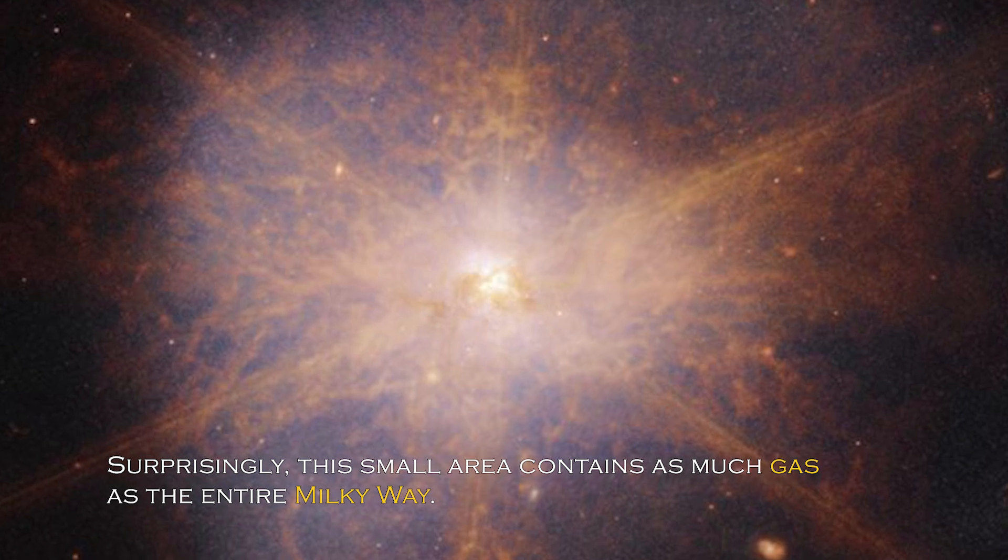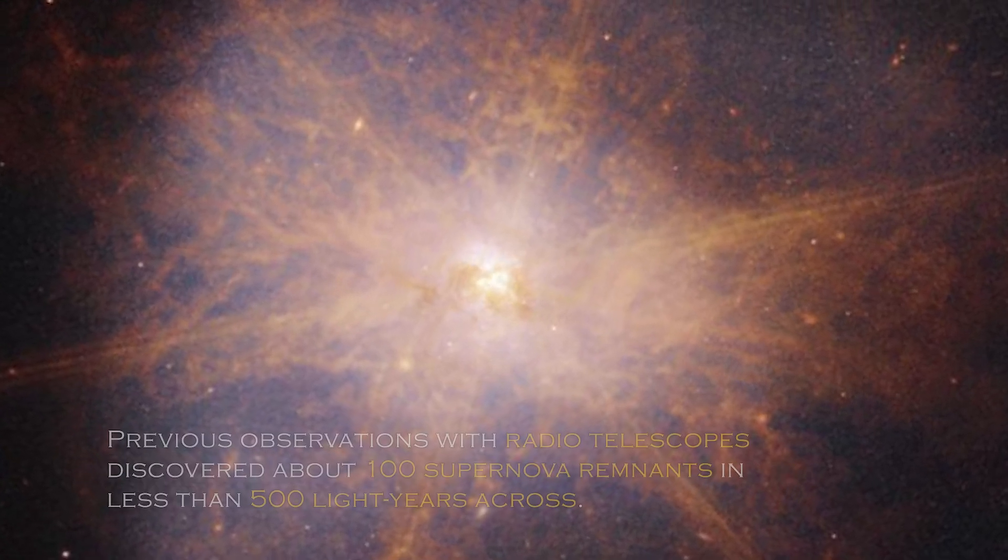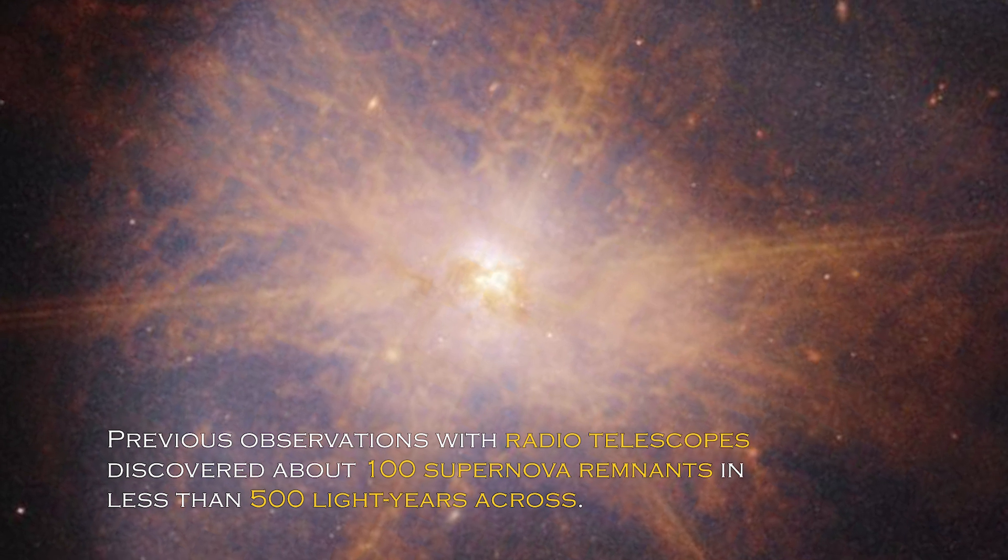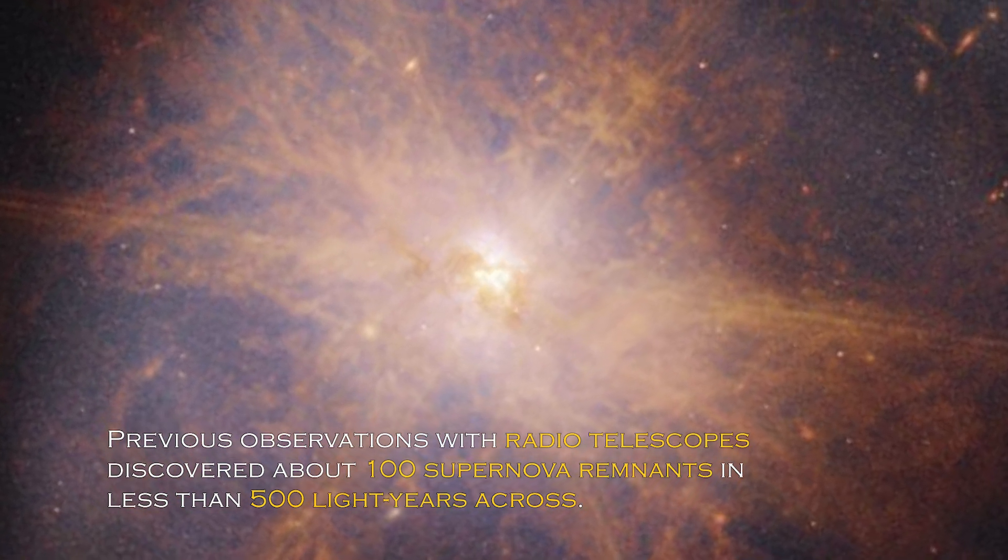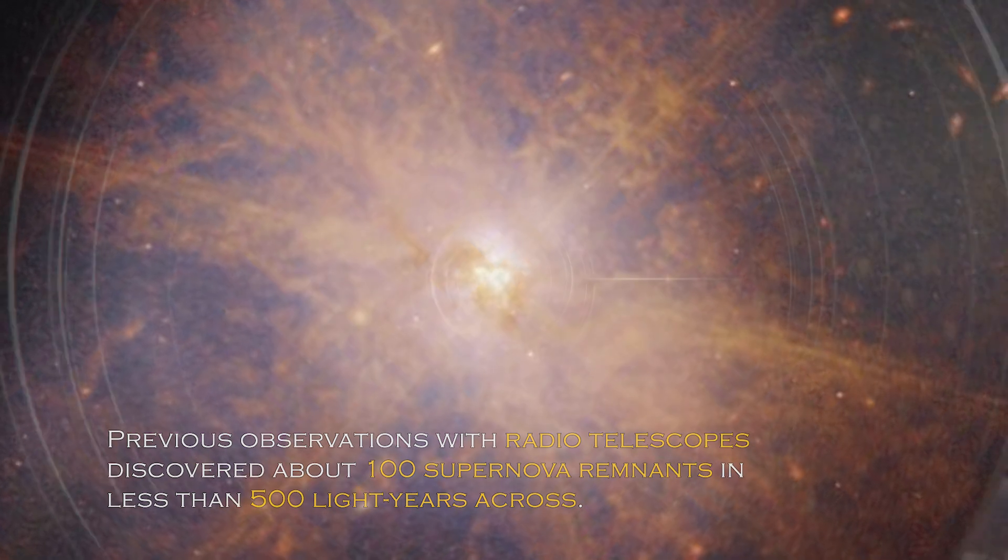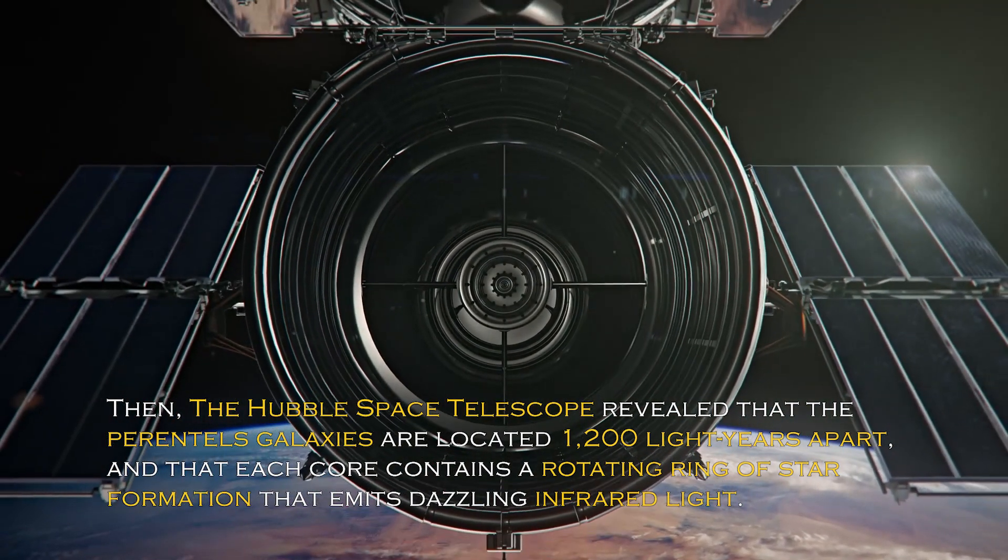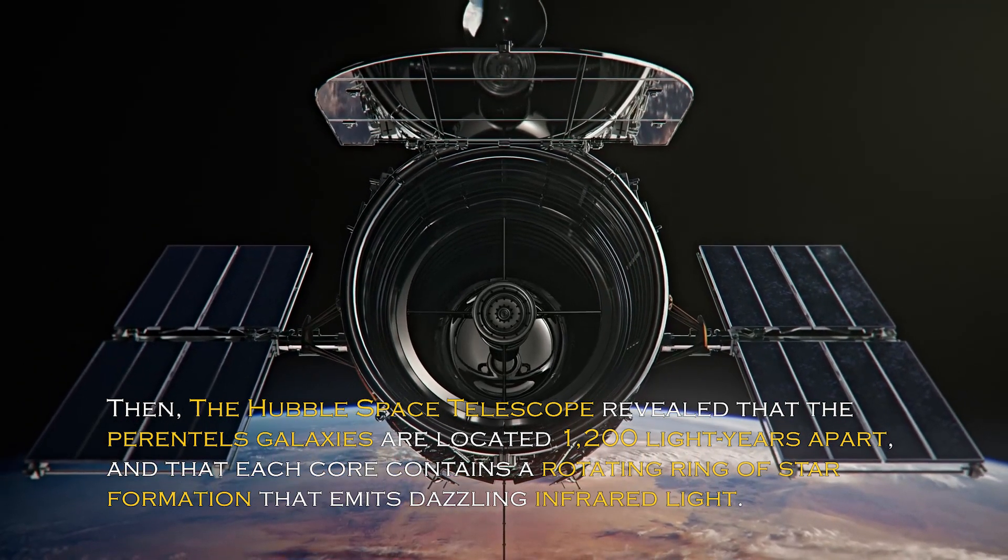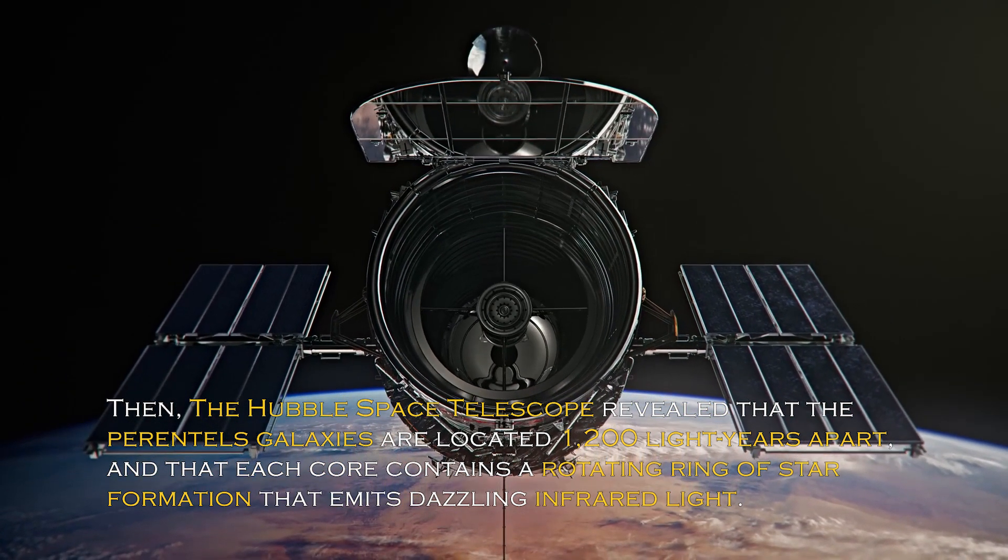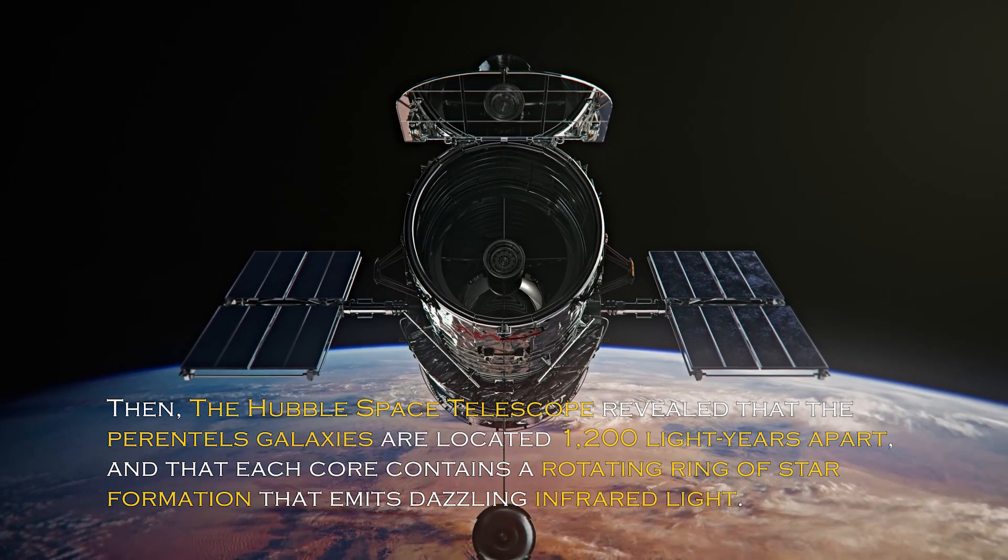Surprisingly, this small area contains as much gas as the entire Milky Way. Previous observations with radio telescope discovered about 100 supernova remnants in less than 500 light-years across. Then, the Hubble Space Telescope revealed that the parent telescope galaxies are located 1,200 light-years apart, and that each core contains a rotating ring of star formation that emits dazzling infrared light.